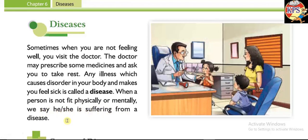When a person is not fit physically or mentally, we say he or she is suffering from a disease. When we fall ill — like fever, nausea, or any other problem — we go to the doctor, who gives us medicines and we feel okay. There are two types of diseases: physical diseases and mental diseases.